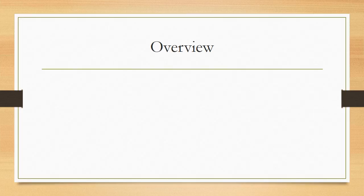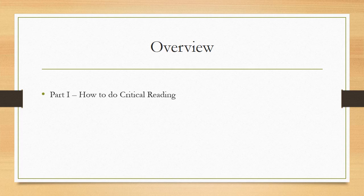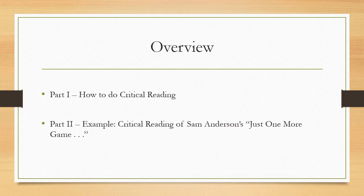This lesson will be broken into two parts. The first part will be understanding of critical reading. What is it and how do we do it? And then the second part will be an example, a critical reading of Sam Anderson's article Just One More Game. I have assigned three articles for you to read for this lesson. The first one is going to be like my example. I'm going to take you through a critical reading of this article to apply the skills we learn in part one of the lecture.